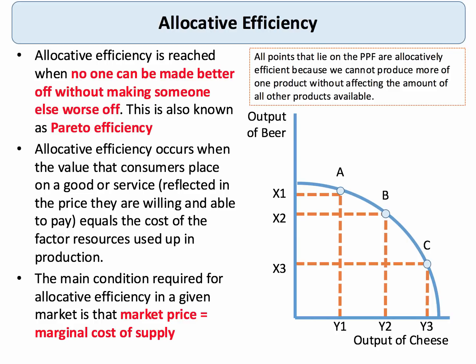Allocative efficiency is reached when no one can be made better off without making somebody else worse off — that's known as the Pareto optimum criteria. Another way of thinking about efficiency is to do with the price that's charged. A market is allocatively efficient if the value that consumers place on a good or service, reflected in their demand, is equal to the marginal cost of factor resources used up in production. So allocative efficiency in the market is when the market price equals the marginal cost of supply.